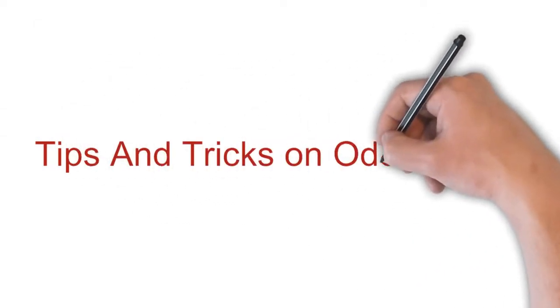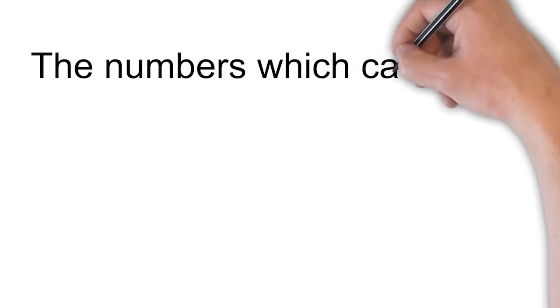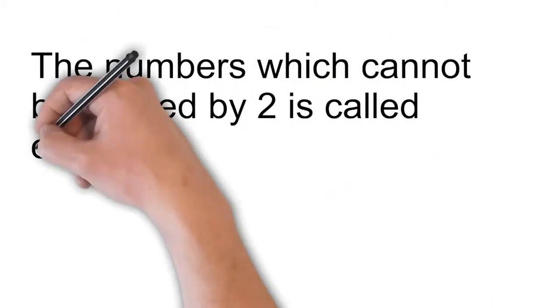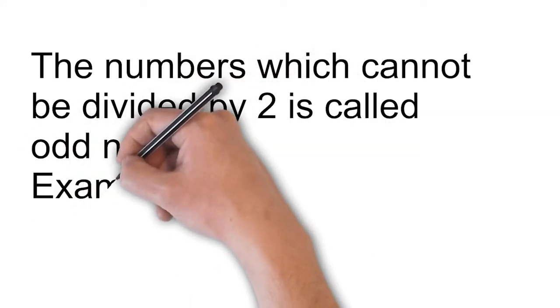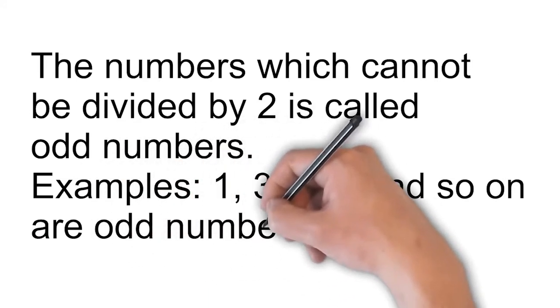Tips and tricks on odd numbers. The numbers which cannot be divided by 2 are called odd numbers. Examples: 1, 3, 5, 7 and so on are odd numbers.